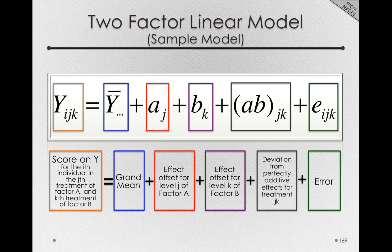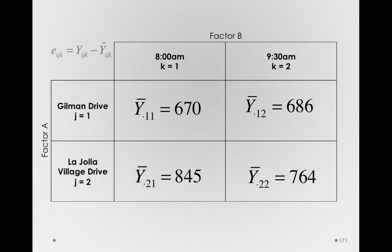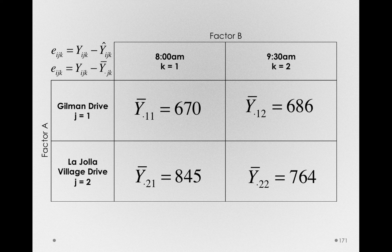Before exploring how we'll test these effect offsets using the analysis of variance, let's further discuss the EIJKs — the errors or residuals in our two-factor linear model. Error will simply be the deviation between an individual's actual observed score and the score predicted by the model. The score predicted by the model will simply be the mean of the group an individual is a member of. A treatment mean is really the combination of the levels of two factors. All the individuals in each of these groups will deviate from their group mean, and the degree to which they deviate is our measure of error.